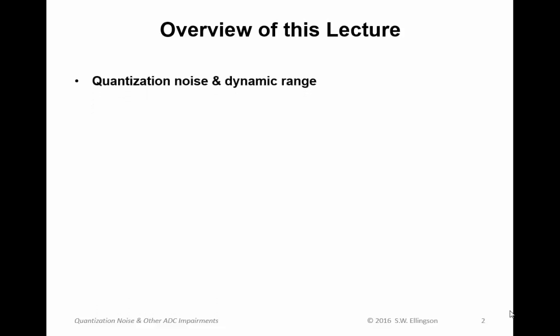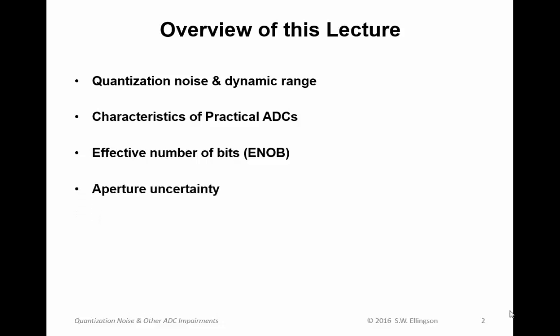First, we'll define quantization noise and how it affects dynamic range. We'll discuss characteristics of practical analog-to-digital converters. We'll talk about effective number of bits, commonly abbreviated ENOB. We'll talk about aperture uncertainty, and then we'll do an example of characterization of practical ADCs.